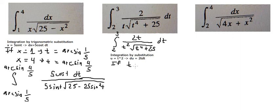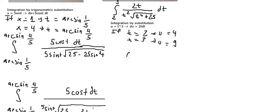We need to change the boundary. If t equals number 2, then u should be about number 4. If t equals number 3, then u should be about number 9.